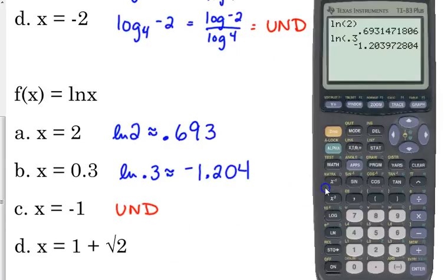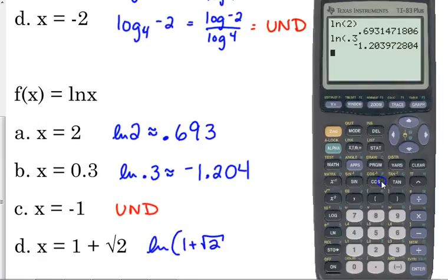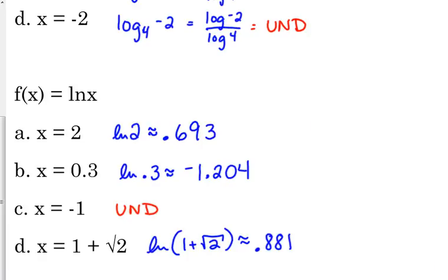And D is just there so that you know you can type anything in. It doesn't matter what the number is, as long as it is not negative or 0. You can find the log of it. 1 plus the square root of 2. I don't know why on earth you would want to know the natural log of that, but you never know. I'm just trying to make a point. You can type anything, or you can take the log of anything but 0 and a negative number.